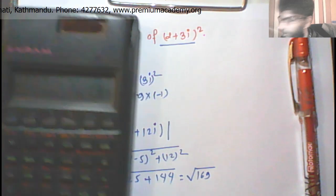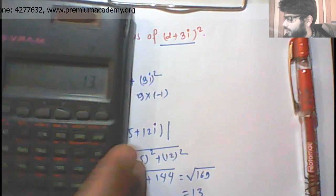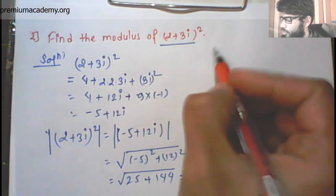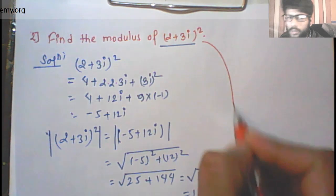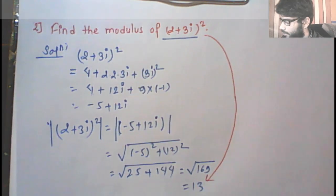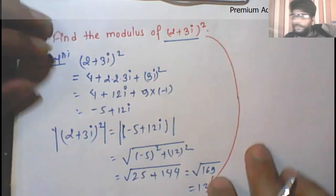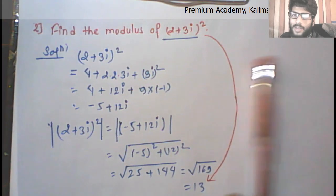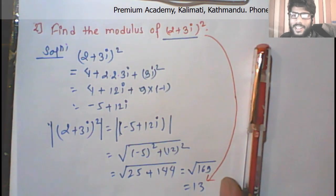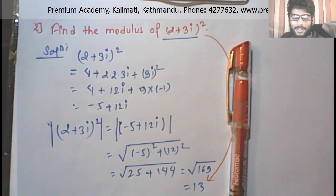So the answer is 13. The modulus of (2 plus 3i) squared is 13. In the next class, we will see the remaining problems. There will be some very interesting ones.